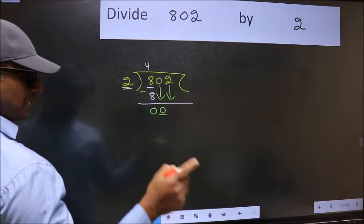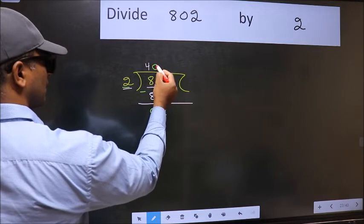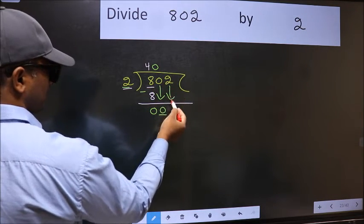And the rule to bring down the second number is we should put 0 here. Then only we can bring this number down.